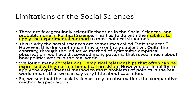Through the inductive method of systematic empirical observation, we have discovered many patterns that reveal much about how politics works in the real world. We have found many correlations — empirical relationships that often can be expressed with great mathematical precision. We know of direct relationships where two or more variables move in the same direction, and indirect or inverse relationships where variables move in different directions. But relationships are not causations.